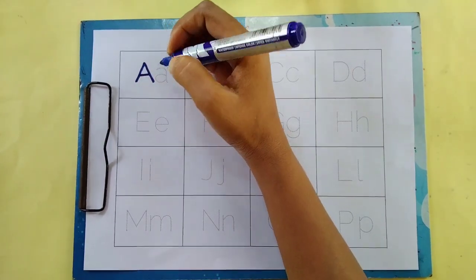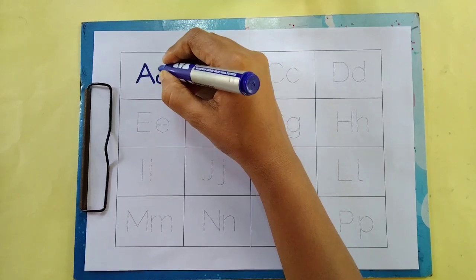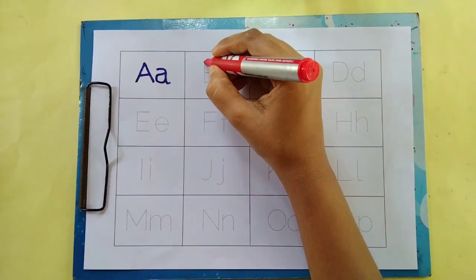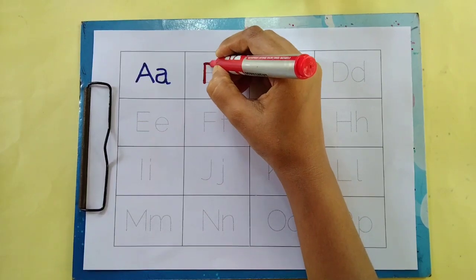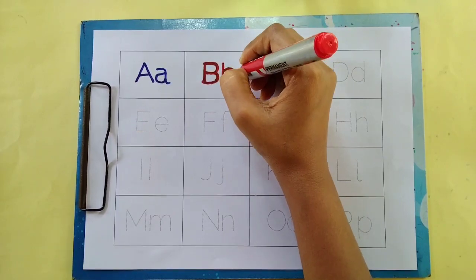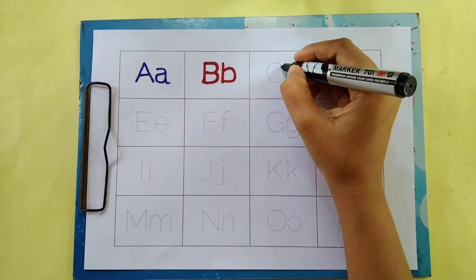A, A for apple, A for apple red color. B, B for ball, B for ball black color.